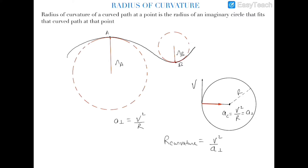Now if we try to establish a relationship between the radius of curvature and the acceleration or velocity, we can say that if we compare any motion with a circular motion — motion on a curved path — then there is an acceleration which is always directed towards the center of the circle. This acceleration is perpendicular to the velocity and is called the centripetal acceleration.